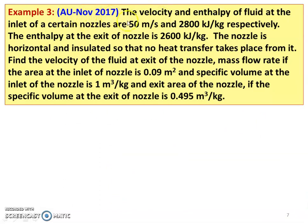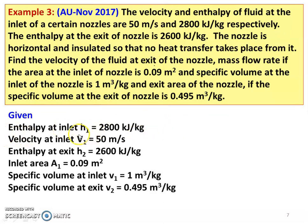Example number 3, from the November 2017 question paper. The velocity and enthalpy of fluid at the inlet of a nozzle are 50 meters per second and 2800 kJ per kilogram respectively. The enthalpy at the exit of the nozzle is 2600 kJ per kilogram. The nozzle is horizontal and insulated so that no heat transfer takes place. Find the velocity of the fluid at the exit, the mass flow rate if the inlet area is 0.09 meter square and specific volume at inlet is 1 meter cube per kilogram, and the exit area if the specific volume at exit is 0.495 meter cube per kilogram.